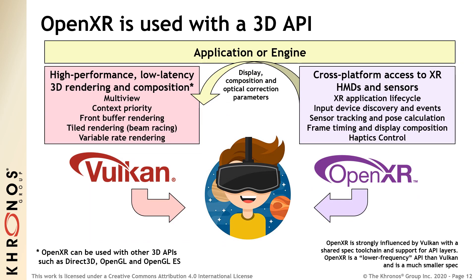So what functionality does OpenXR provide? OpenXR contains everything an application needs to drive XR devices in a system, including device discovery, event processing, sensor tracking and pose calculations on the input side, and frame display timing and composition plus haptics control on the output side. OpenXR deliberately doesn't include 3D rendering functionality, so an OpenXR application will also use a rendering API such as Vulkan to generate imagery. OpenXR can be used with any 3D API, but a new generation API such as Vulkan is particularly well suited to create applications with high rendering performance and low latency that are vital for a compelling XR experience.